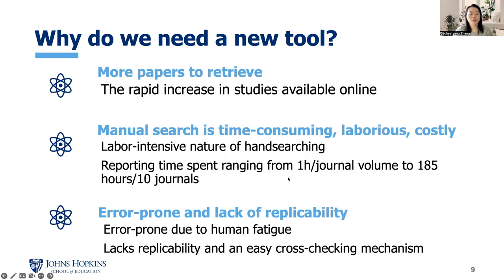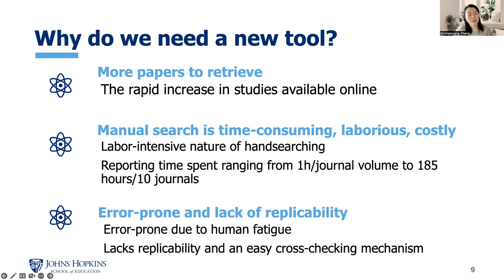So why do we need a new tool? Broadly, there are three reasons. The first reason is that there is a rapid increase in studies available online, and therefore there are more papers to retrieve. The second reason is that manual search is time-consuming, laborious, and costly — time spent on this type of search ranges from one hour per journal volume to 185 hours per 10 journals. The third reason is that it's error-prone and lacks replicability. Manual search makes us tired, and it's easy to make mistakes. It also lacks an easy cross-checking mechanism.